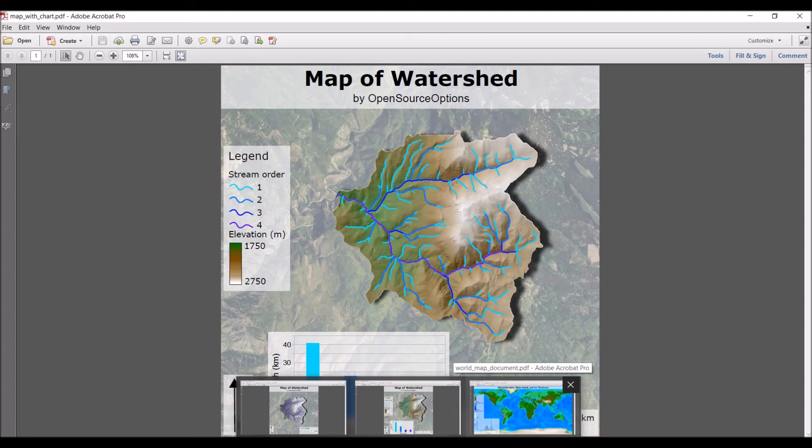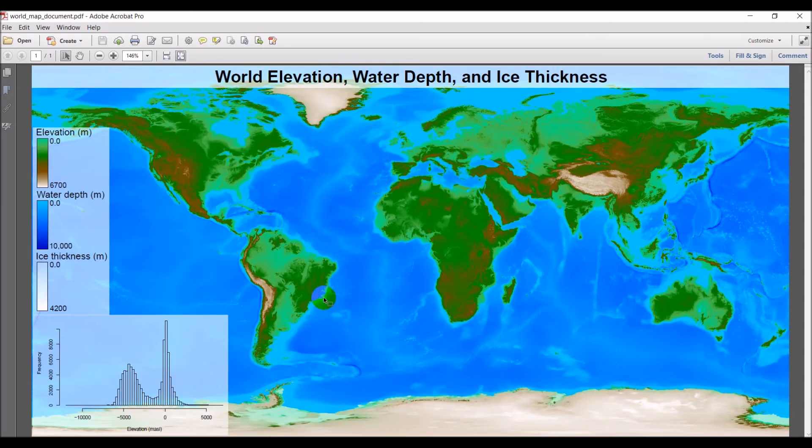And then we'll move on to a final map, this world map of elevation, and we'll go through how to create an ice depth map and how to make custom color ramps.